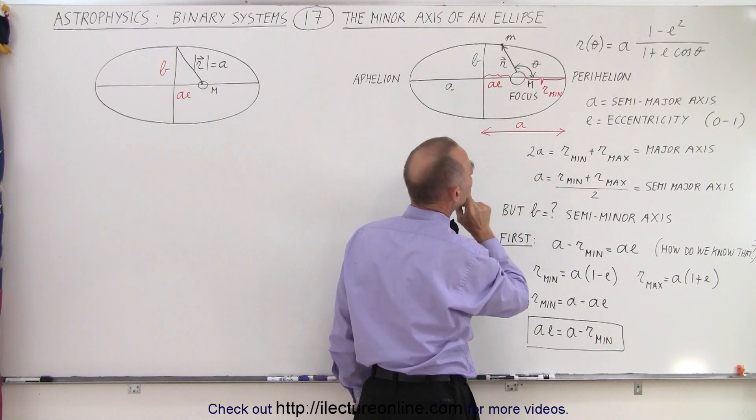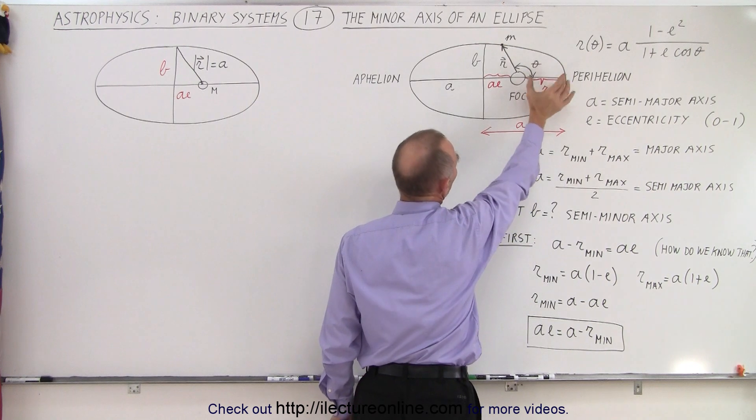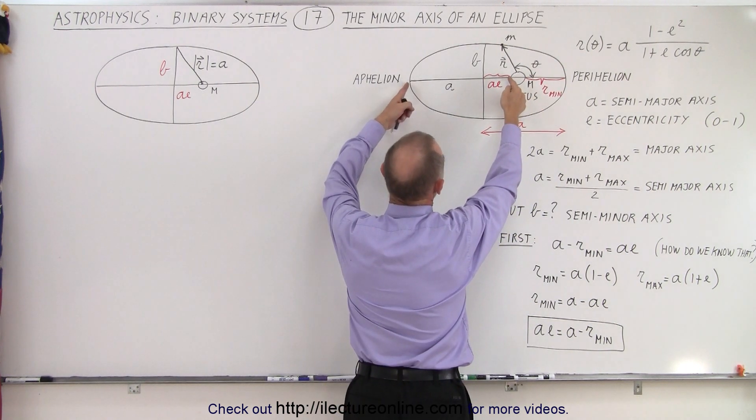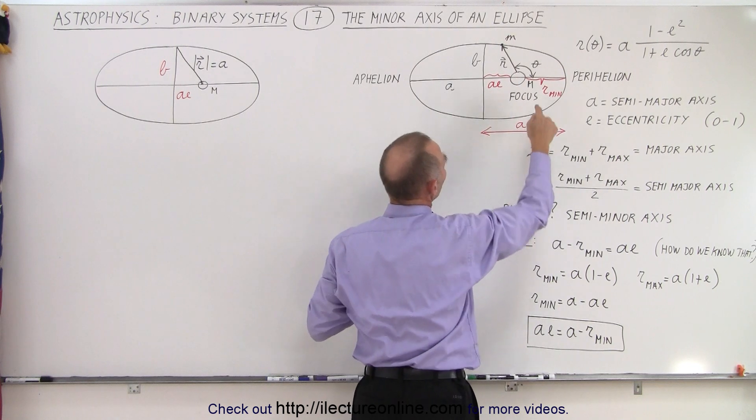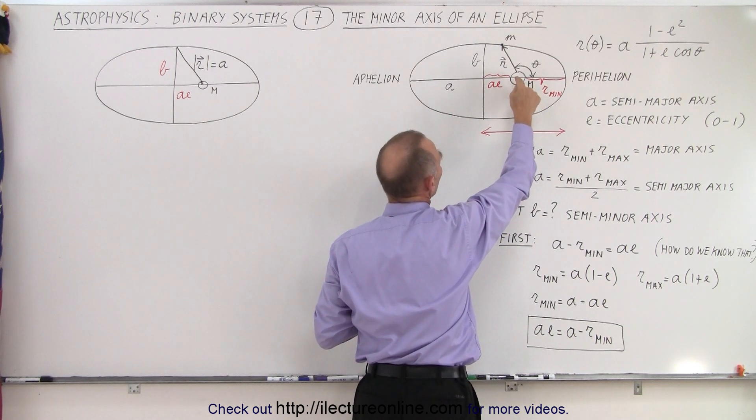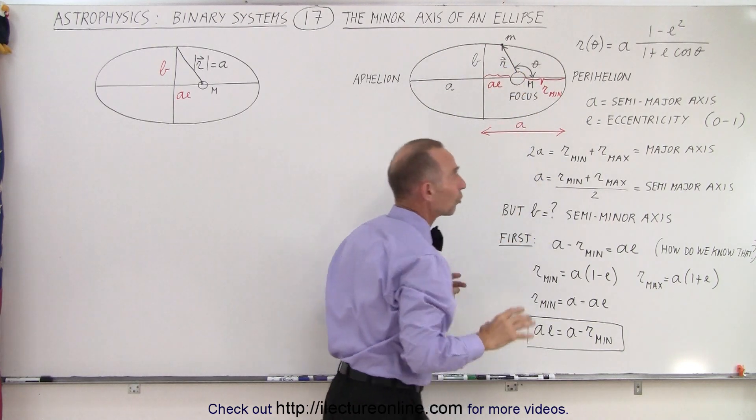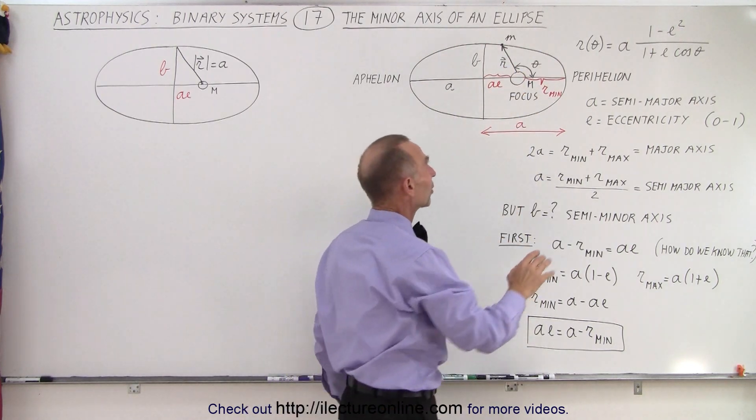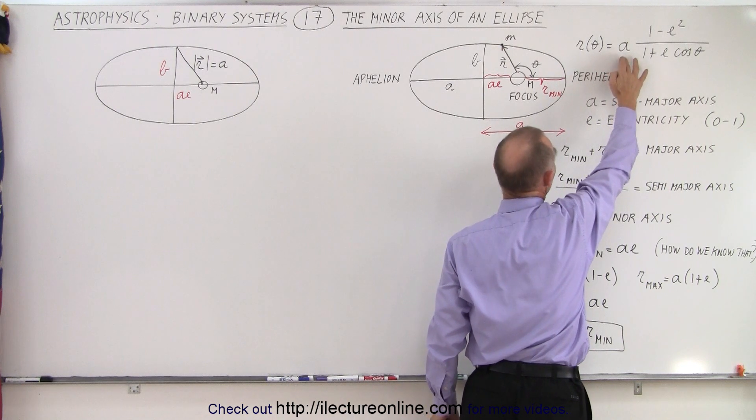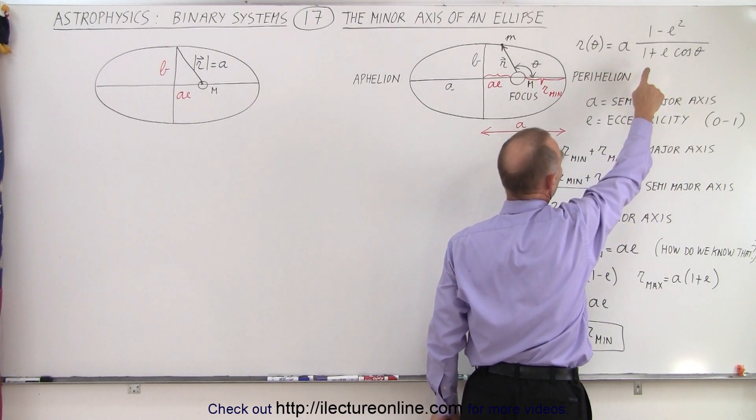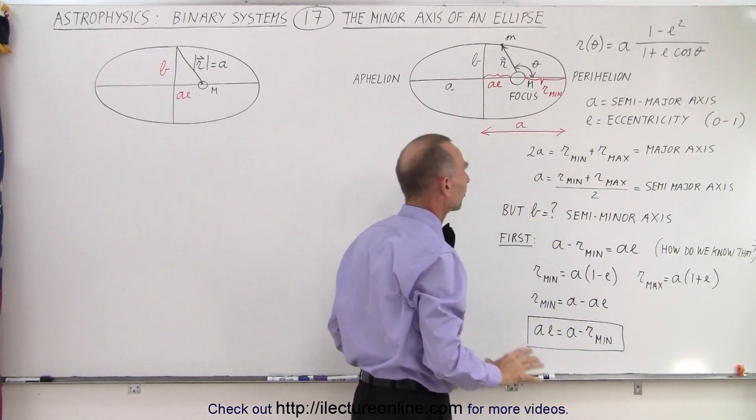How do we know that? Well, we'll get that in just a moment. This here is what we call the minimum r distance, and from here to there is the maximum r distance. Notice that r, the distance from the sun to where the planet is at any point in its orbit—we call that the vector r—and the magnitude of r can be defined as A, which is the magnitude of the semi-major axis, times (1 - e²)/(1 + e cos θ).